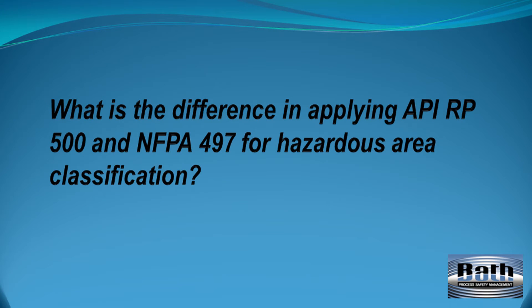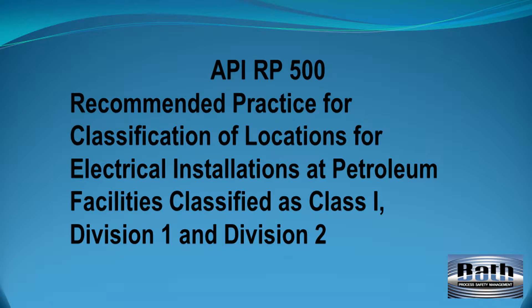What is the difference in applying API-RP500 and NFPA-497 for Hazardous Area Classification? This is a very good question. The title of API-RP500 is Recommended Practice for Classification of Locations for Electrical Installation at Petroleum Facilities that are classified Class I, Division I and Division II.